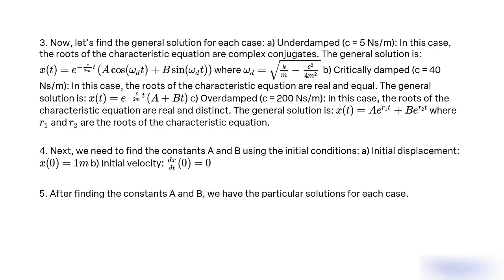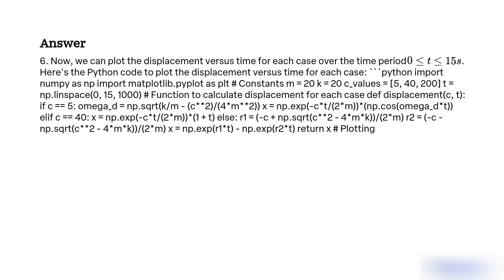After finding the constants A and B, we have the particular solutions for each case. Now we can plot the displacement versus time for each case over the time period 0 ≤ t ≤ 15s. Here's the Python code to plot the displacement versus time for each case.